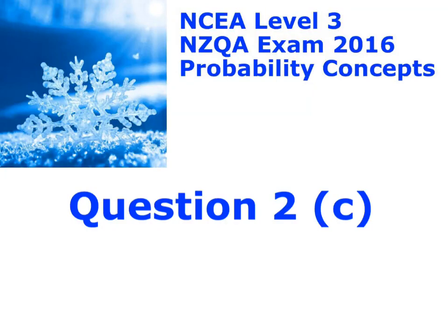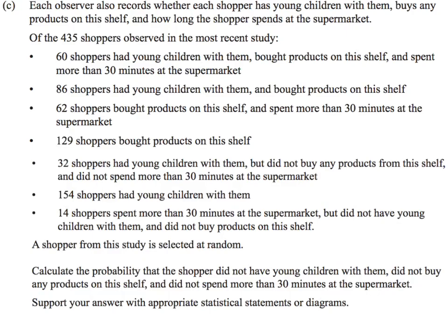Here is question 2C. This is all the information that we've been given. They're talking about recording whether the shoppers have young children with them, what products they buy on the shelf, and how long they spend at the supermarket. So we've got three different variables. We could do this as a probability table, a tree diagram, or a Venn diagram.